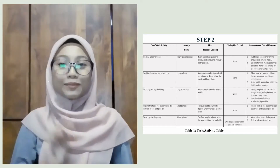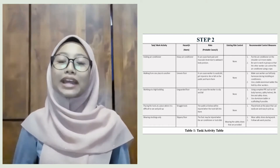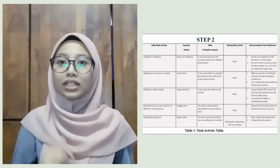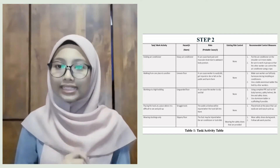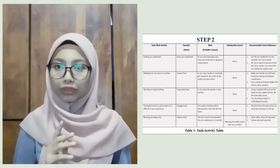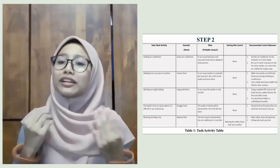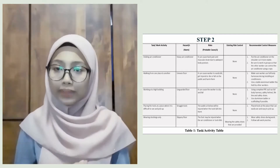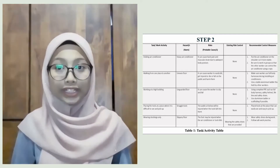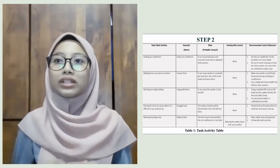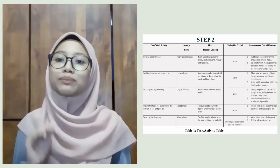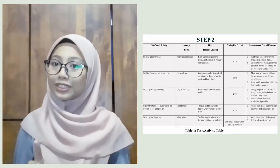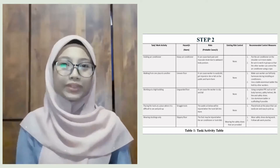Number four: placing tools at a place that is difficult to see and reach. The hazard is a straggling tool. The risk is that it can injure the public when the tool falls from the building. The recommendation is to place the tool at a place where it is easy to see and reach.